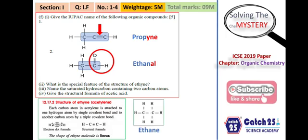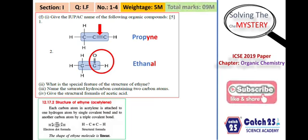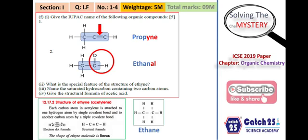The next question asks to name the saturated hydrocarbon containing two carbon atoms. 'Saturated hydrocarbon' means alkane, and 'hydrocarbon' means the molecule is made up of only carbon and hydrogen. A saturated hydrocarbon with two carbons is ethane, with the structure CH₃–CH₃.